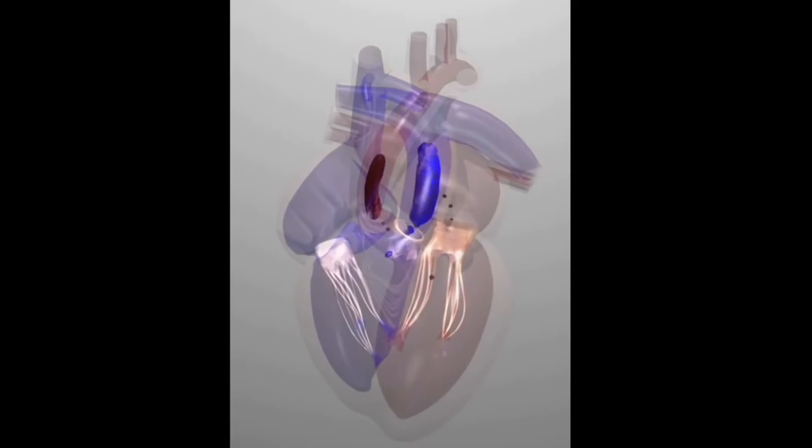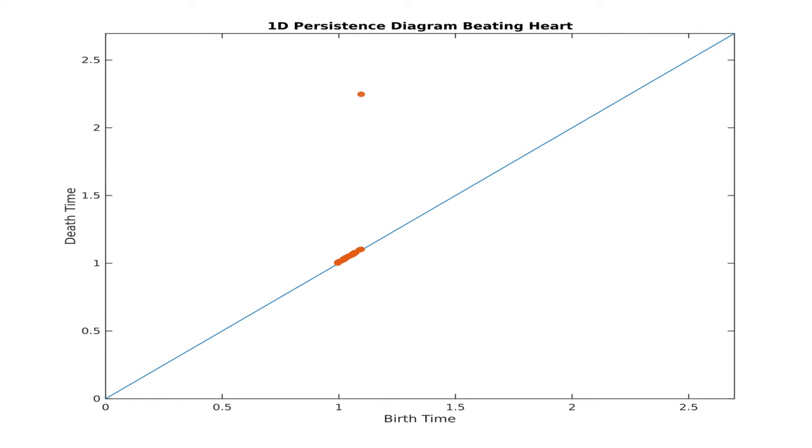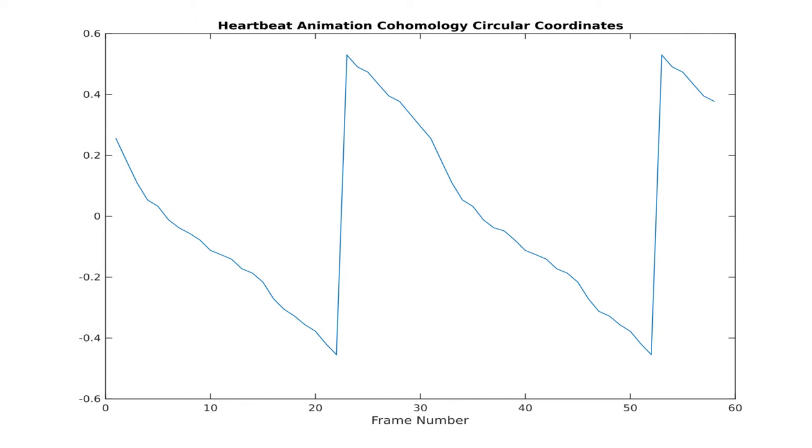Let's look at another example video, this time of an animation of a beating heart. As with the jumping jacks example, 3D PCA shows a nice loop, though only about 30% of the variance is explained with these three dimensions. But again, the 1D persistence diagram shows a strong cycle exists, and the cohomology circular coordinates corresponding to the strongest class nicely parameterize the heartbeat.